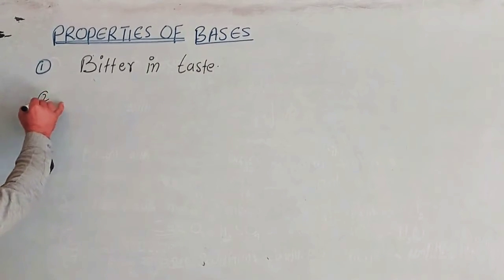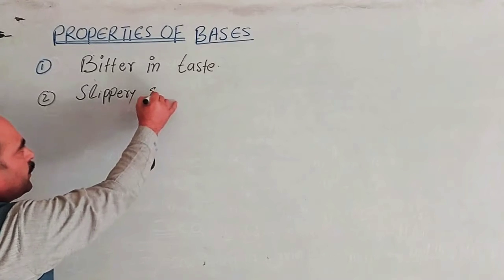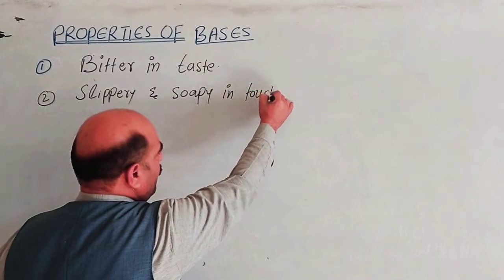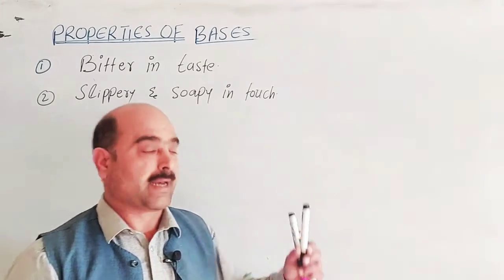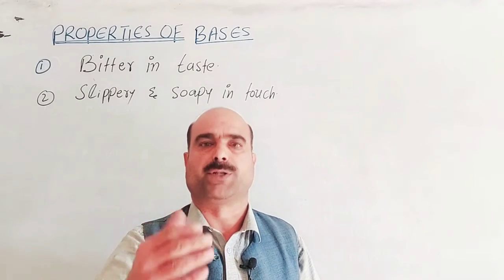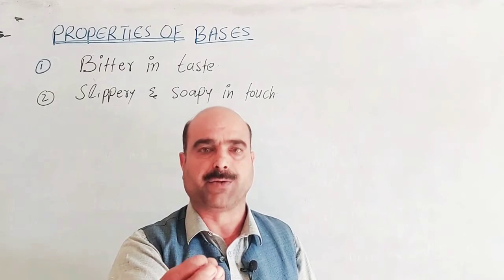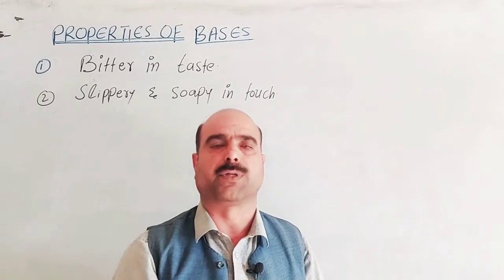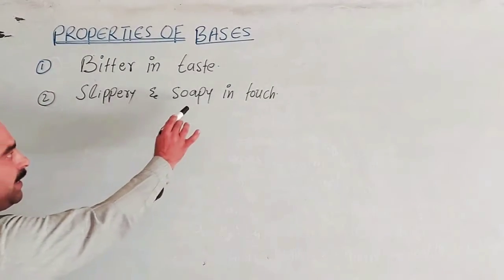The second property of bases is that they are slippery and soapy to the touch. When you touch a base with your bare hand, it feels slippery — like soap. This soapy, slippery texture is a characteristic physical property of bases.